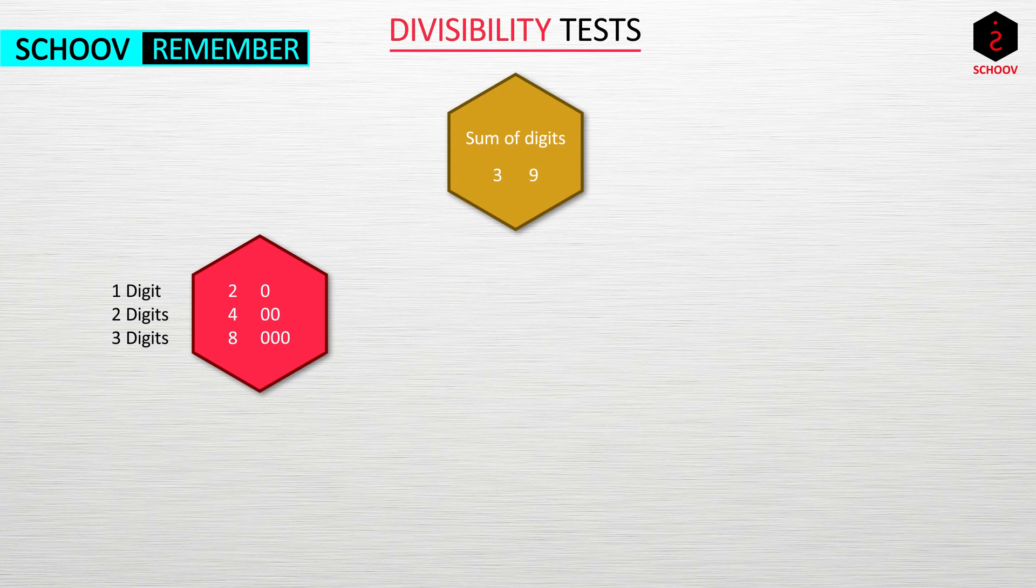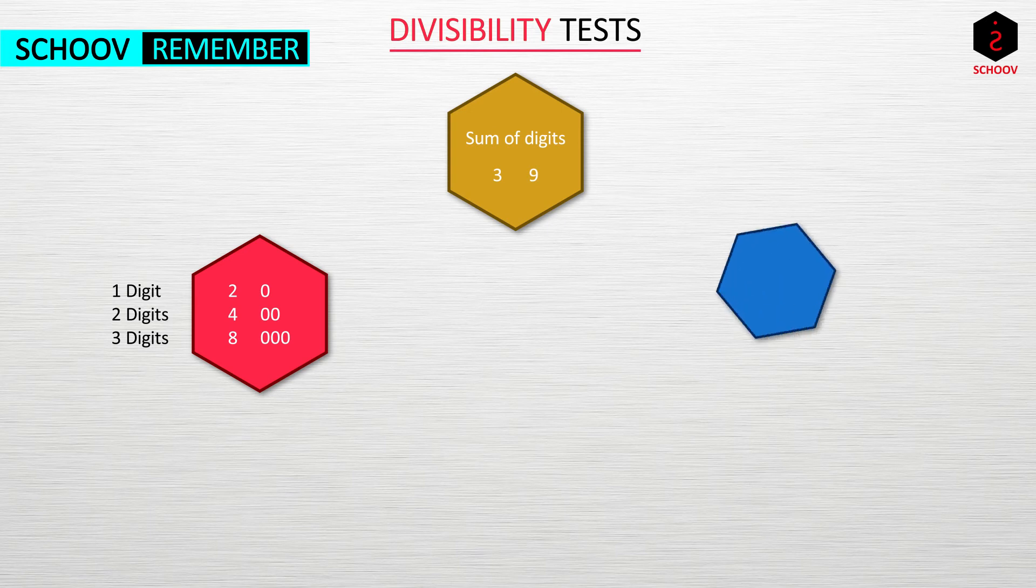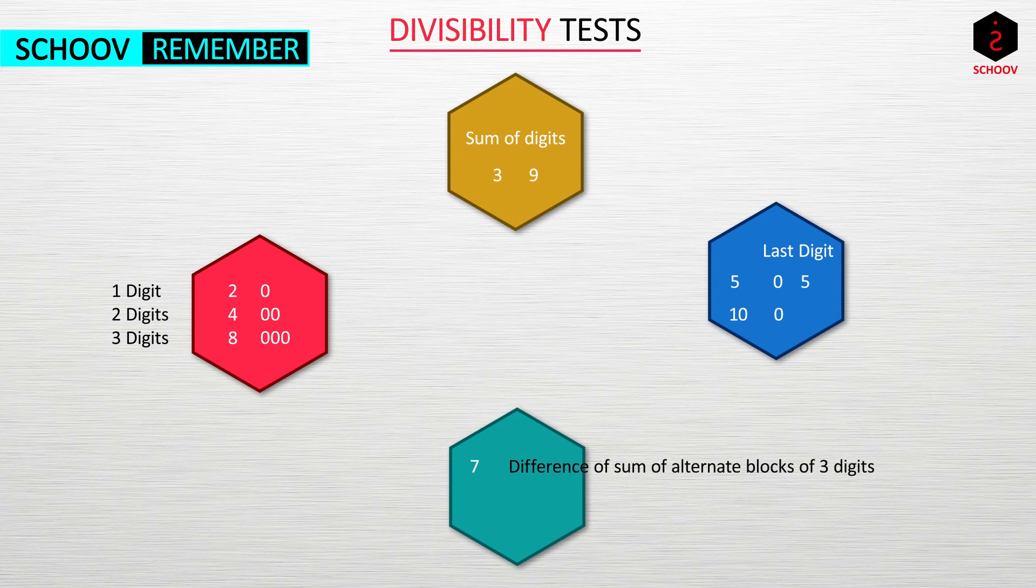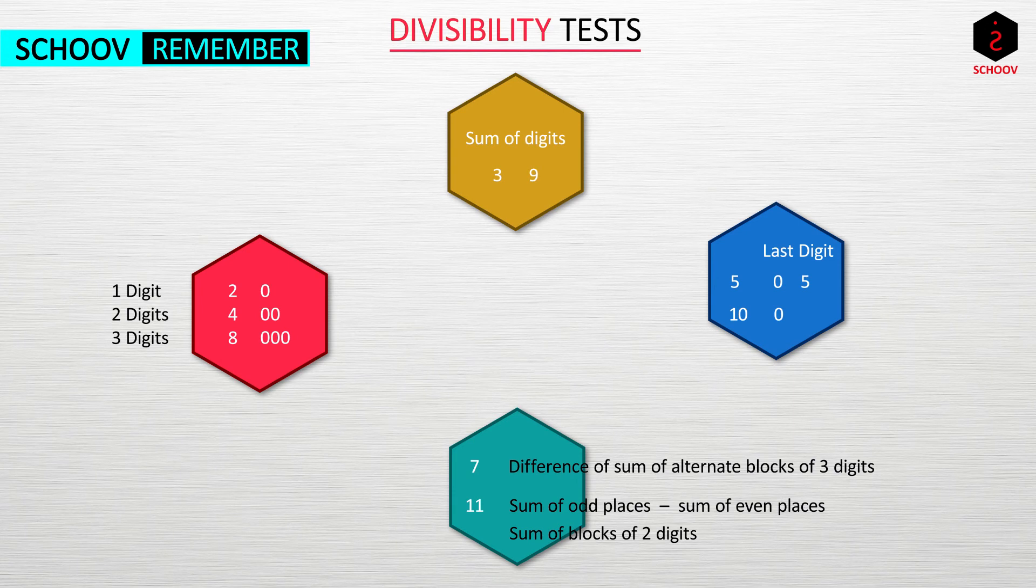By the way, when we say divided by 9, we mean that remainder is 0. For 5, last digit should be 5 or 0, and for 10, last digit should be 0. For 7, difference of sum of alternate blocks of 3 digits must be divided by 7. For 11, difference of sum of even and odd place numbers is either 11 or 0. Another method is sum of blocks of 2 must be divided by 11. In both cases, start from right. We are almost done now. We will close this topic with some fun facts on factors and multiples.